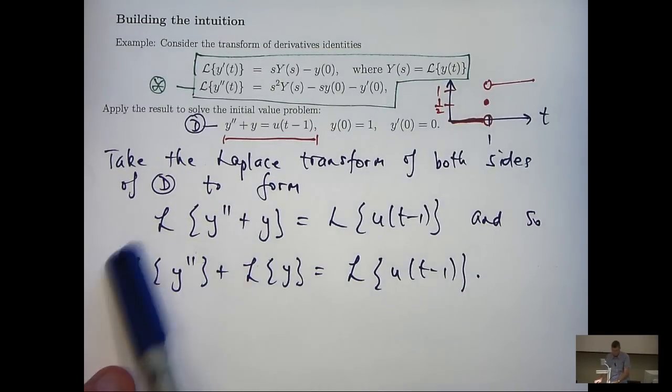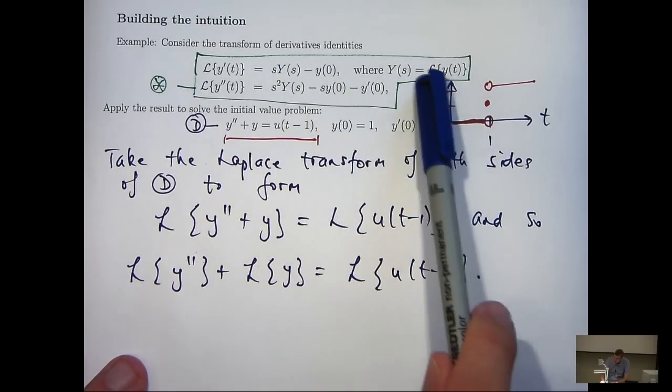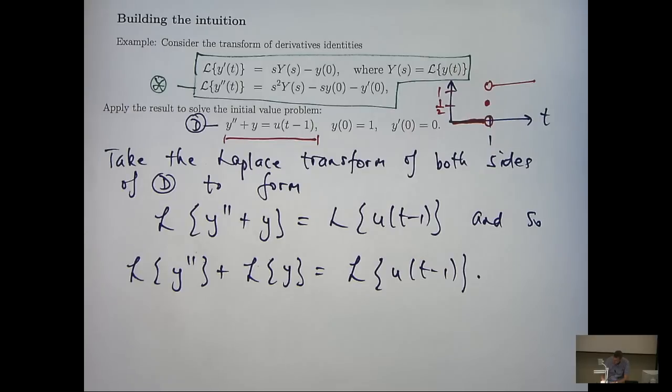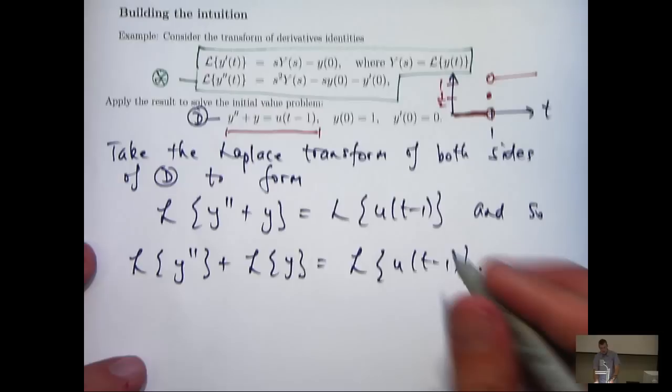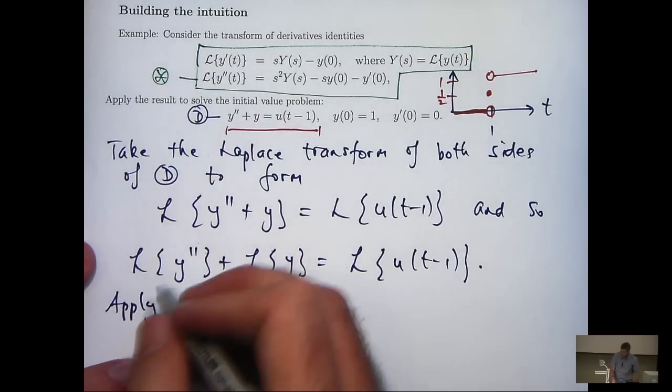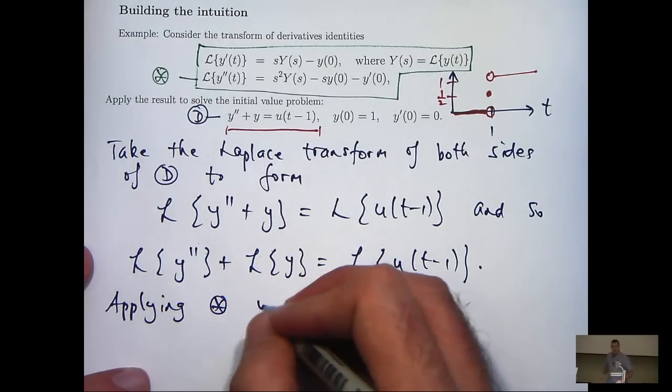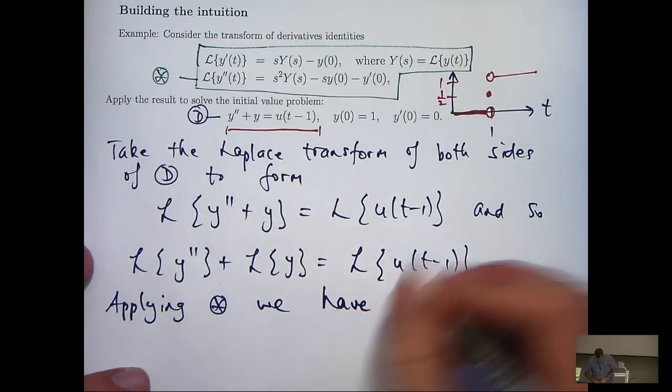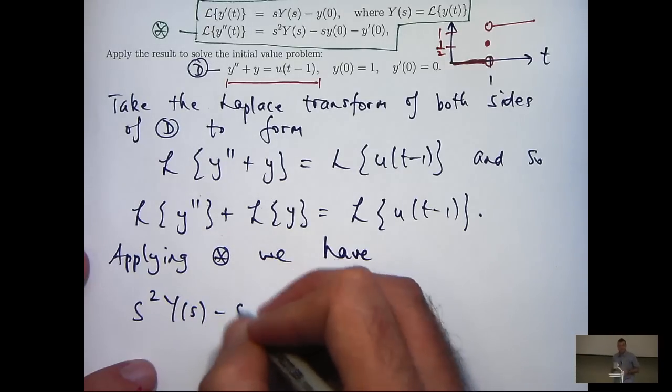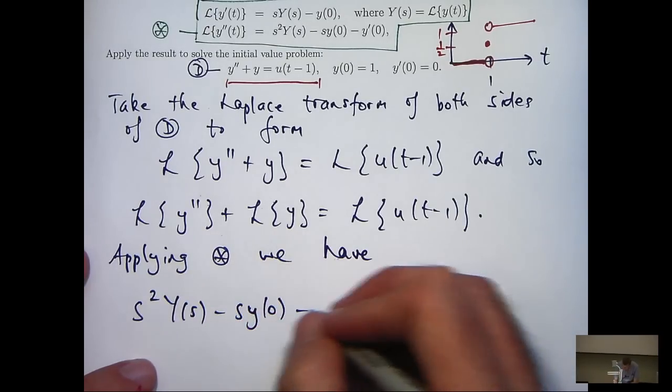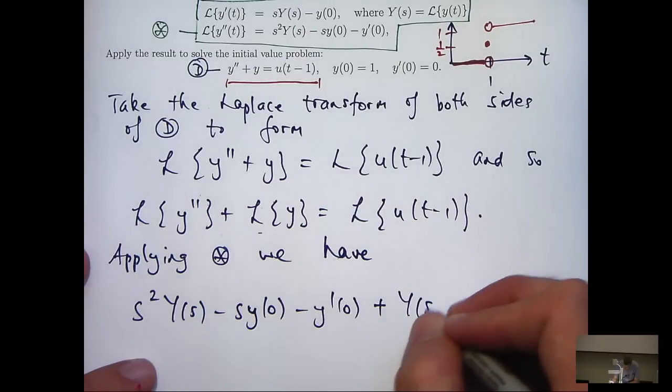Now what we're going to do over here is apply the starred identity, the transform of derivatives where big Y of s is just the Laplace transform of little y of t. So changing this also to big Y of s, I can apply the starred transform of derivatives. So on the left hand side I'm going to get something like this. So my term here is going to be big Y of s.